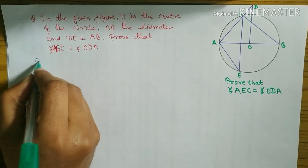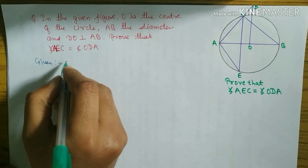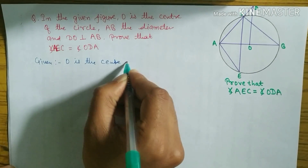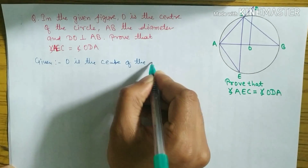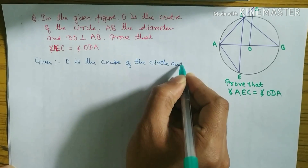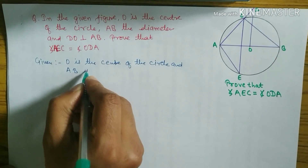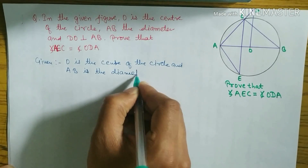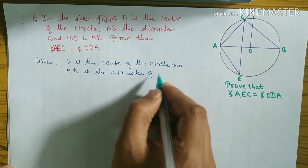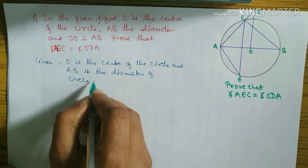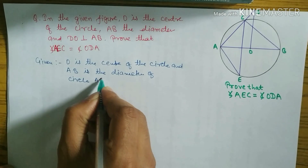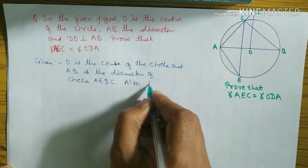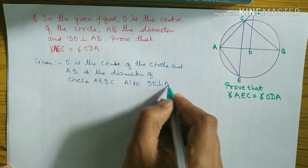Let's start. Given: O is the center of the circle, AB is the diameter of the circle, points A, E, B, C lie on the circle, and DO is perpendicular to AB.